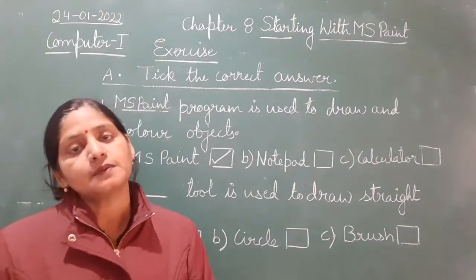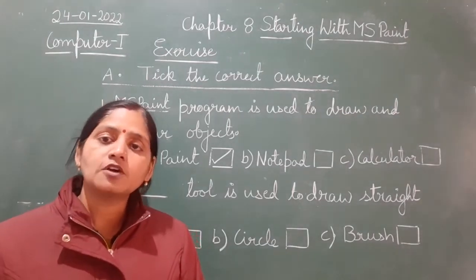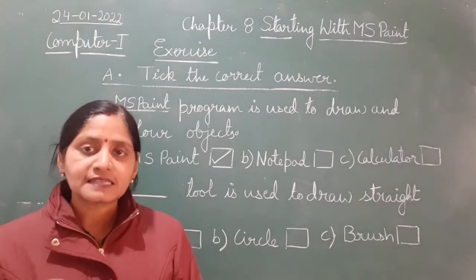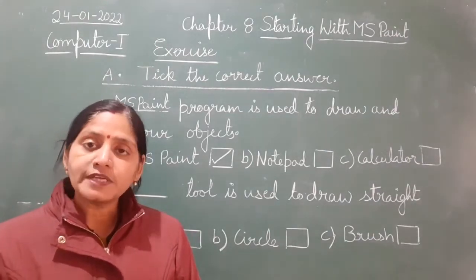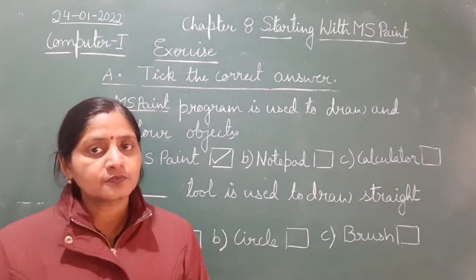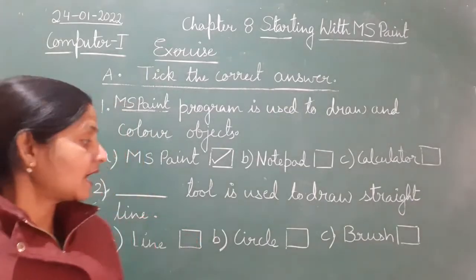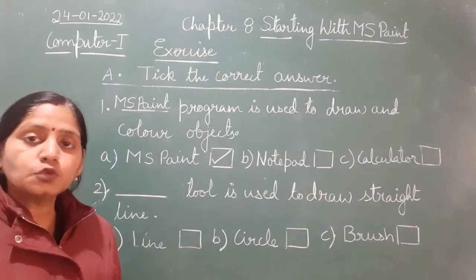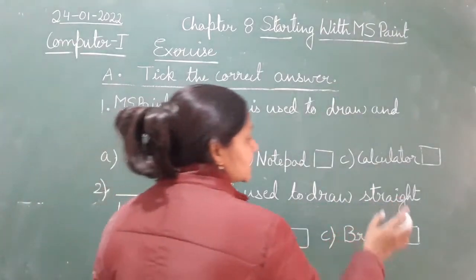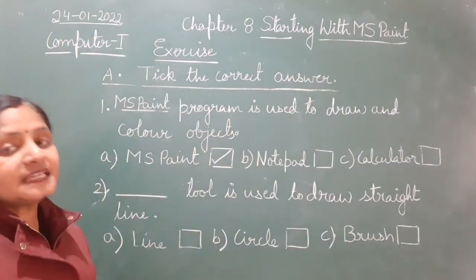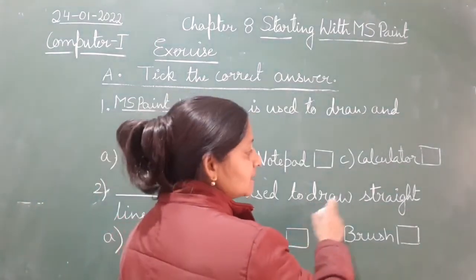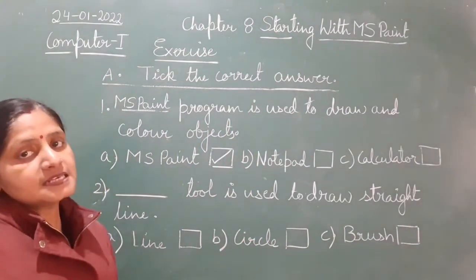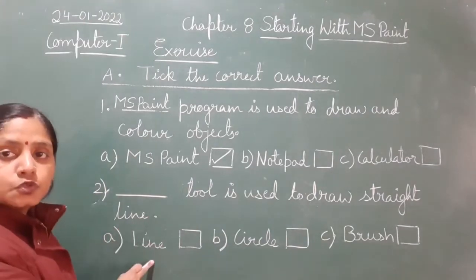All these things we call tools. So pencil is also called a tool, eraser is also called a tool. Everything we need for drawing or coloring, we call it a tool. In MS Paint we have two boxes: one is the color box, which has all the colors for coloring, and the other is the tool box, which has all the drawing tools. If we want to draw a straight line, we choose the line tool from the tool box.